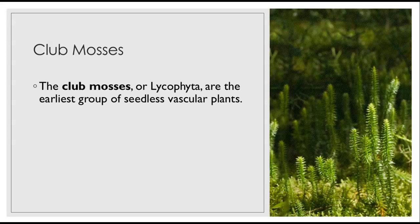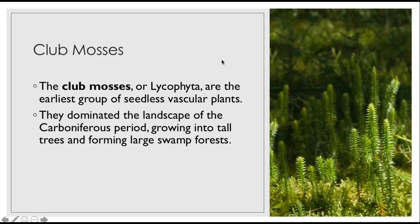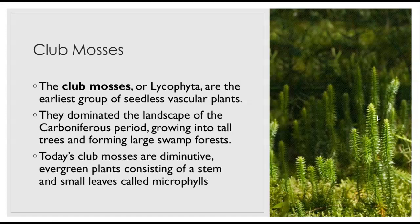Here are the club mosses, or lycophyta — the earliest group of seedless vascular plants. You can tell they're standing up now because they have vascular tissue. They dominated the landscape of the Carboniferous Period, growing into tall trees and forming large swamp forests. Today's club mosses are diminutive, evergreen plants consisting of a stem and small leaves called microphylls.